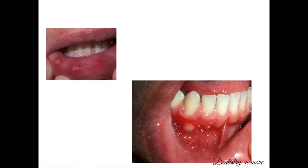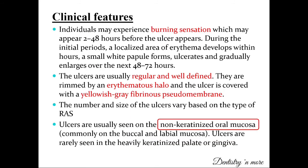This is how the aphthous ulcer presentation looks — you can see the erythematous halo and in the center portion the denuded surface. Clinically, the patient exhibits a burning sensation which appears around 2 to 48 hours before the ulcer appears. A localized area of erythema develops first, then a small white papule forms, ulcerates, and gradually enlarges over the next 48 to 72 hours. The ulcers have well-defined regular borders rimmed by an erythematous halo, and are covered by a yellowish-gray fibrinous pseudomembrane.